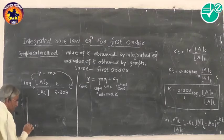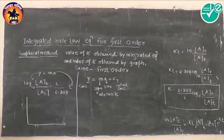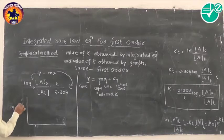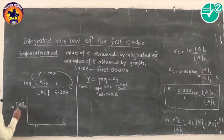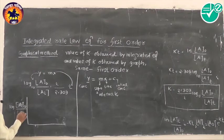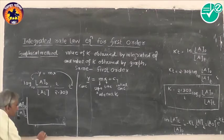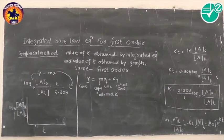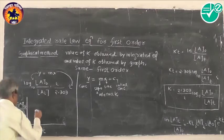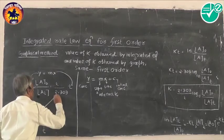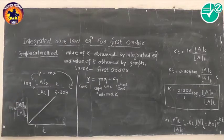Graphically, it is studied by taking different values of concentration change at different times and plotting a graph. Take the values of a0 — the initial concentration — upon concentration at different times, log to base 10, on the y-axis and time on the x-axis. The graph will be a straight line passing through the origin because there is no y-intercept.